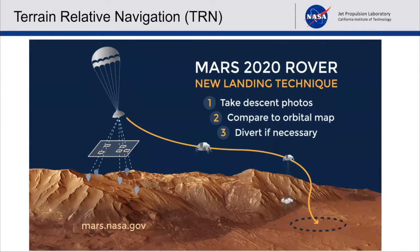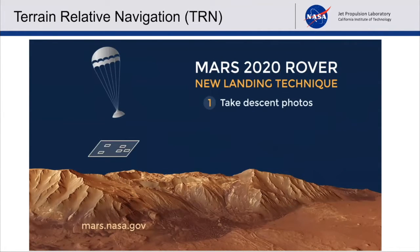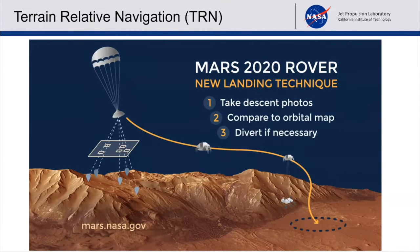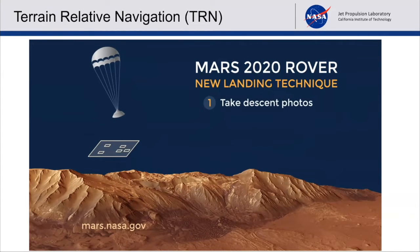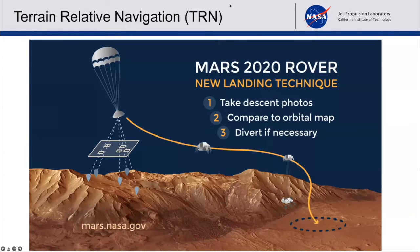After the heat shield separation, something interesting happens called terrain relative navigation. We take pictures and do feature matching with the orbital images. The onboard image processing identifies the location of the lander during descent.